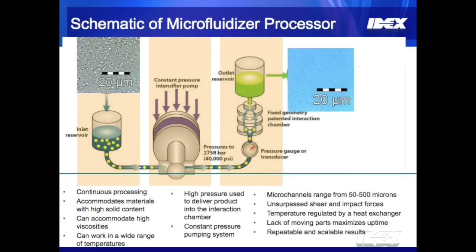This is a schematic of the microfluidizer processor. On the left side is an inlet reservoir, which allows for continuous processing of a variety of materials including high solid loading, high viscosity, and a wide range of temperatures. One of the key characteristics is the constant pressure intensifier pump, which delivers all the material at a very uniform pressure profile to the interaction chamber. The interaction chamber is the heart of the processor — a fixed geometry micro channel ensuring all material is processed at a constant shear rate.